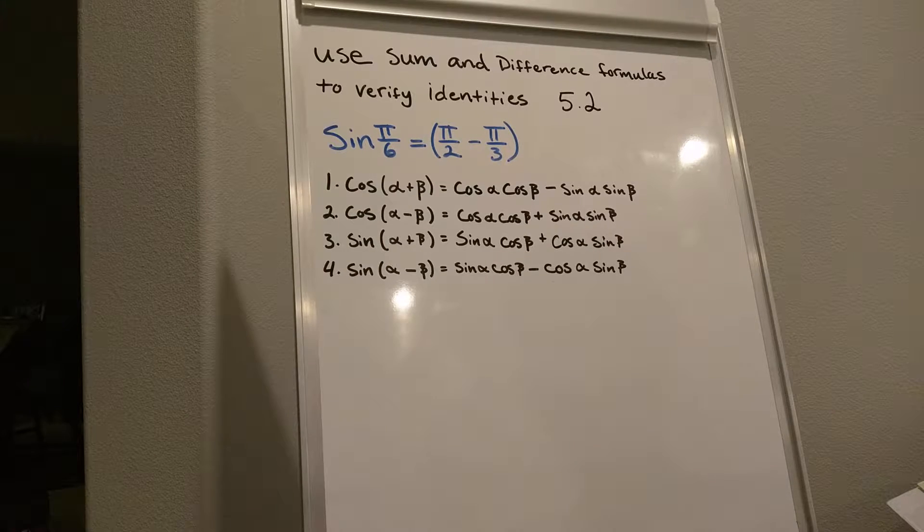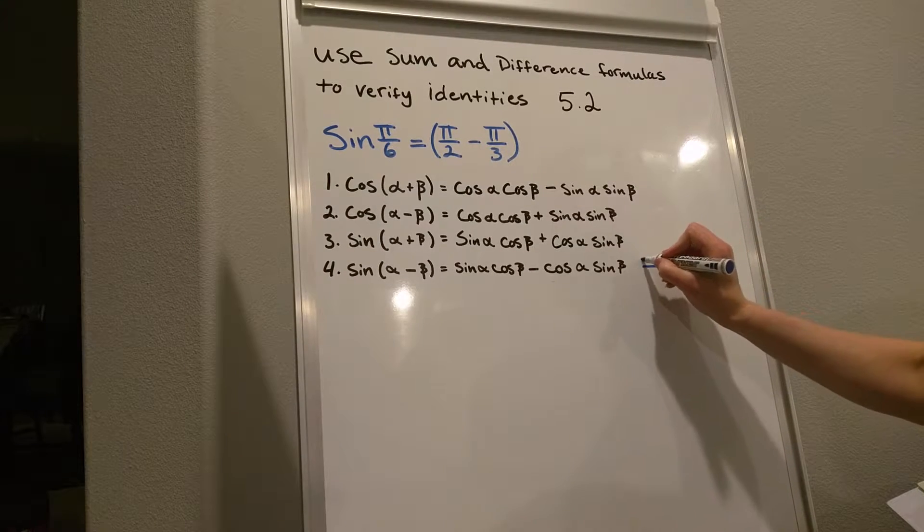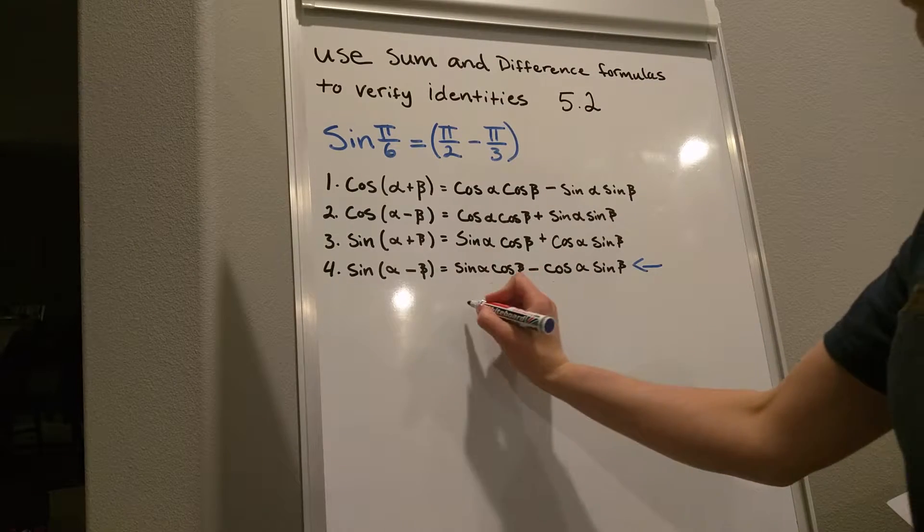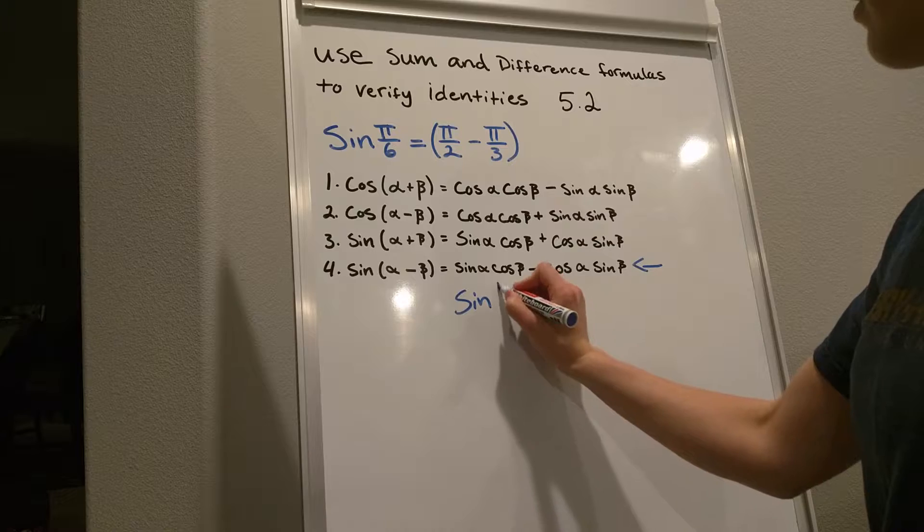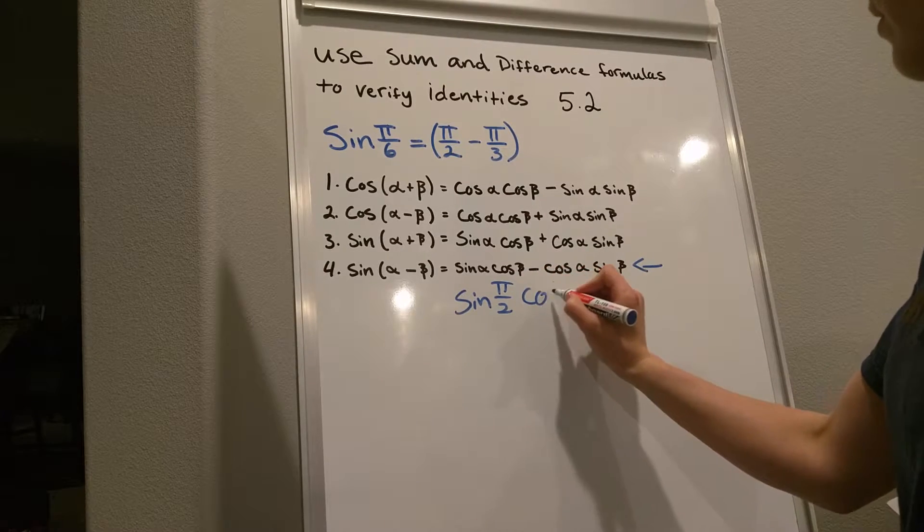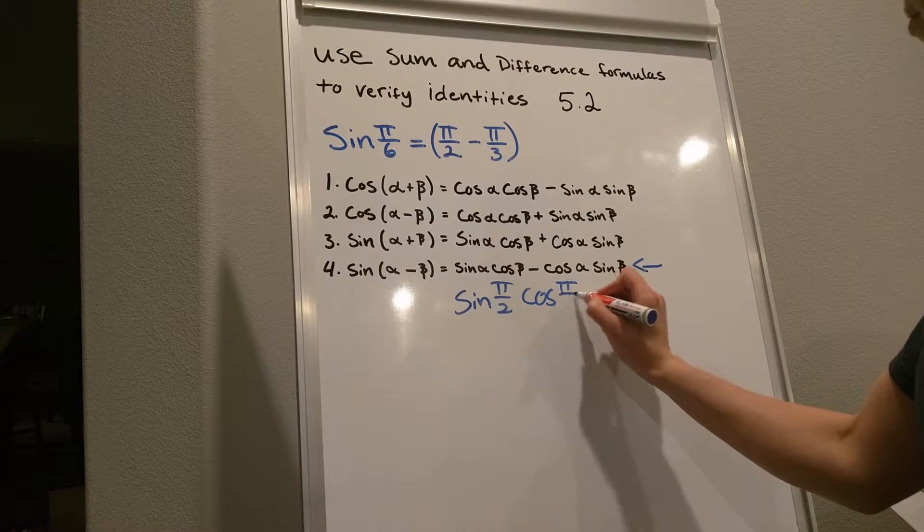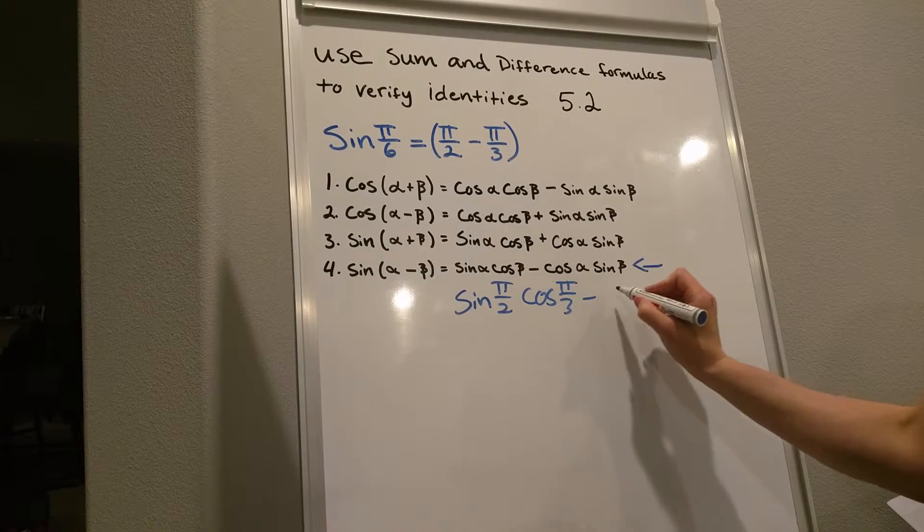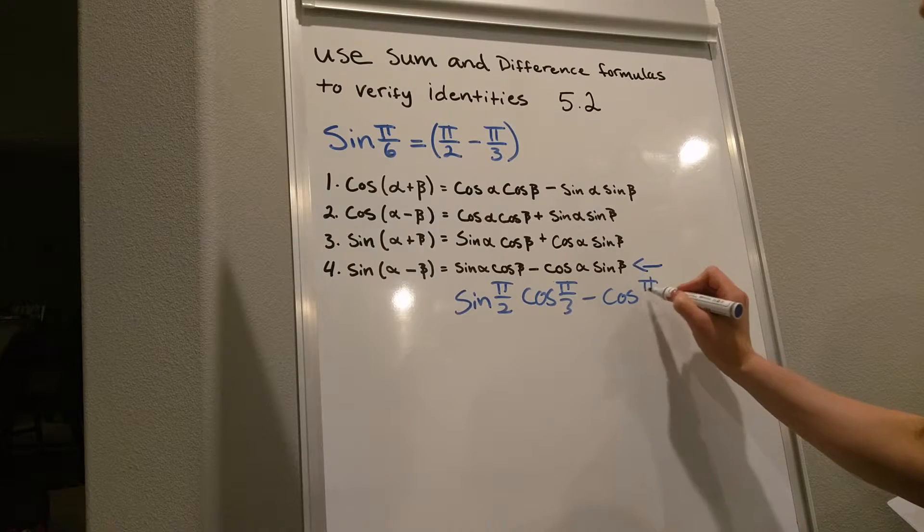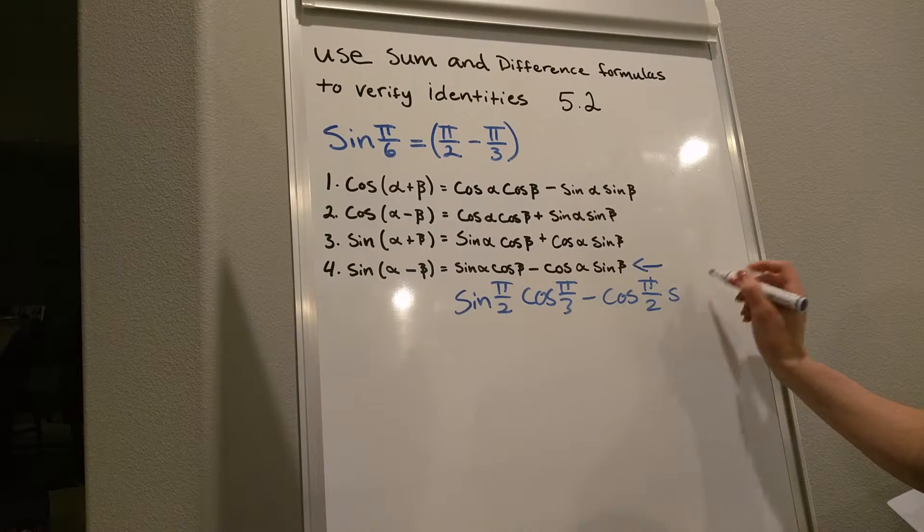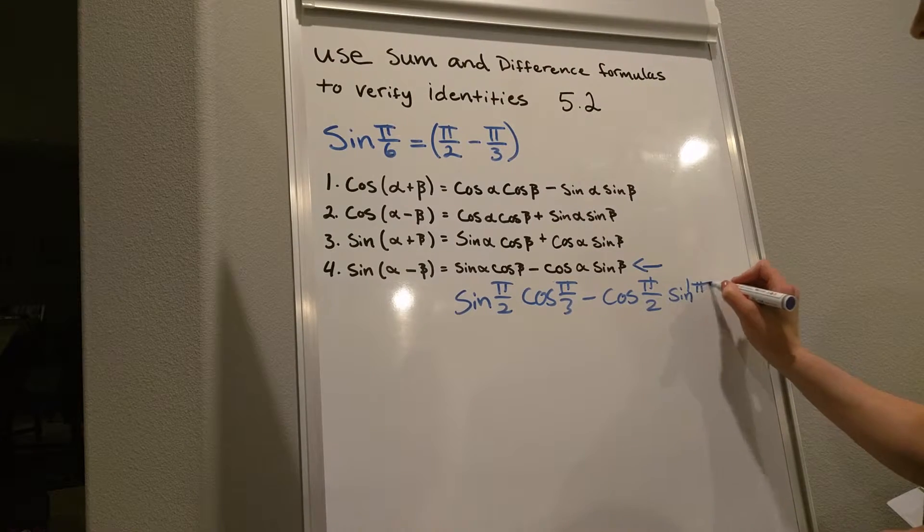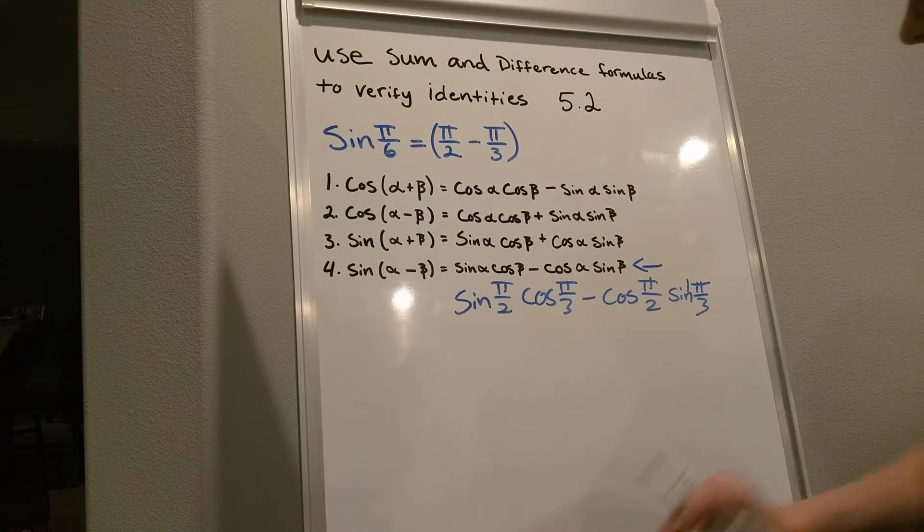Looking at our formulas, we can see that we need to use formula number 4. So let's write this. Sine pi over 2, cosine pi over 3 minus cosine pi over 2 and sine pi over 3.